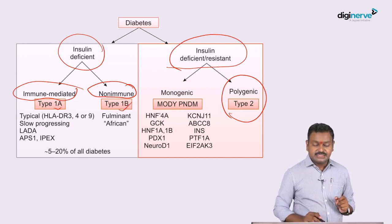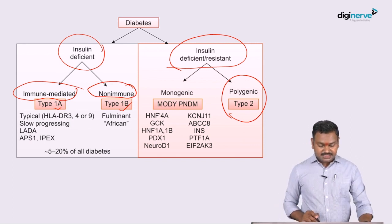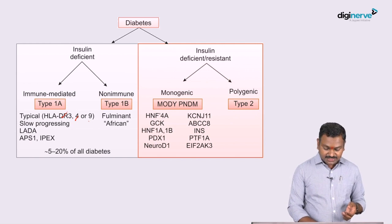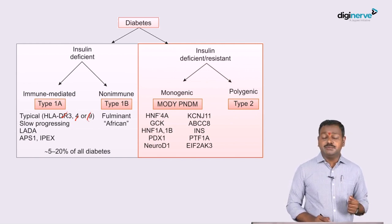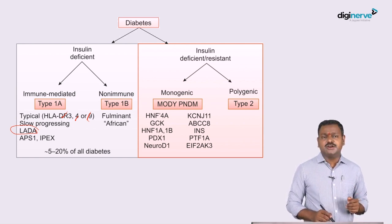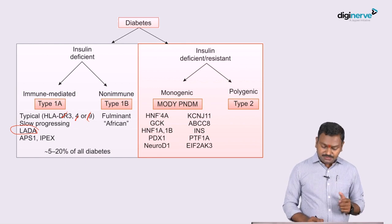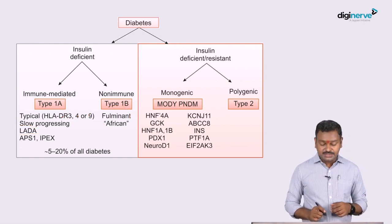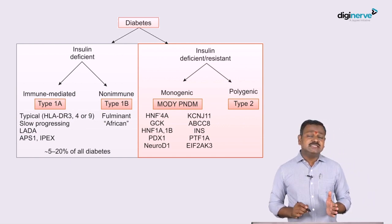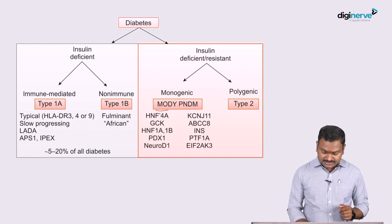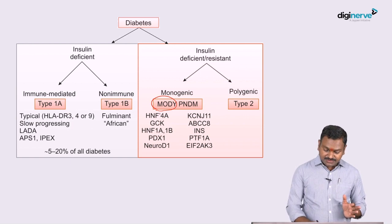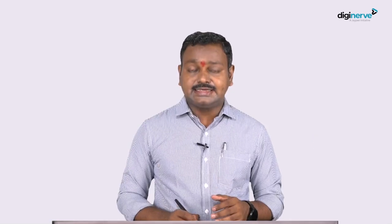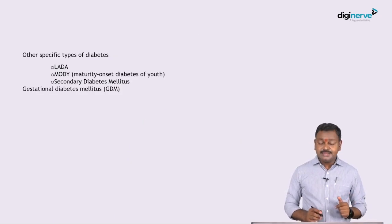Immune-mediated type 1 diabetes is called type 1a and is associated with HLA-DR3, HLA-DR4, and HLA-DR9. Non-immune-mediated type 1 is called type 1b — the latent autoimmune diabetes of adulthood (LADA) accounts for around 5 to 20 percent of total diabetes. The non-immune variety where antibodies are not produced is classically seen in the African population as fulminant African non-immune type 1 diabetes. The monogenic insulin-resistant form includes MODY — maturity onset diabetes of the young — a major type seen in early adults.